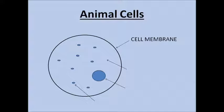Animal cells have a cell membrane around the outside. It has tiny holes in it to allow small substances into and out of the cell.